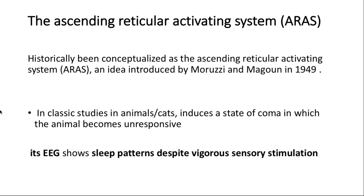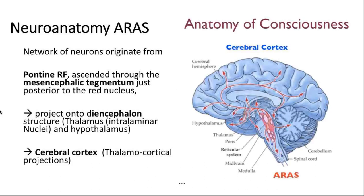The neuroanatomy of the reticular activating system — depicted in red on the diagram — originates from the superior portion of the pons, specifically the pontine reticular formation. It ascends to the midbrain, through the mesencephalic tegmentum, then goes to the diencephalon — composed of the thalamus and hypothalamus — and from there creates thalamocortical projections, specifically to the frontal cortex, maintaining communication between the brainstem, the RAS, and the frontal cortex.